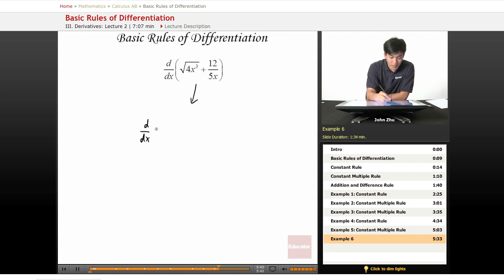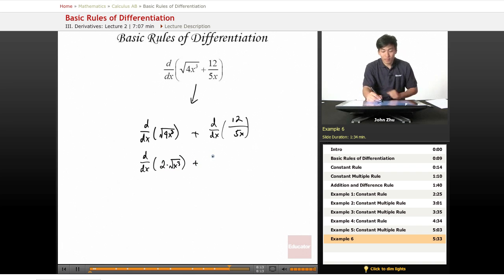Split this up into two parts: d/dx of square root of 4x cubed plus d/dx of 12 over 5x. We can further split these up. d/dx of square root of 4x cubed equals square root of 4 times square root of x cubed, which means 2 times square root of x cubed. Plus, for the second part, we have 12 over 5 times 1 over x.